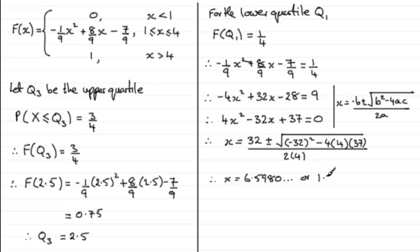Or if you take the negative value, you end up with 1.4019 and so on. Now the 6.5980 is clearly out of range. We only want values of x between 1 and 4.